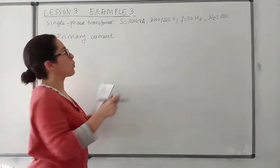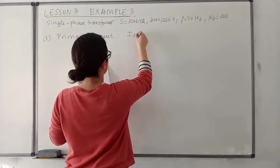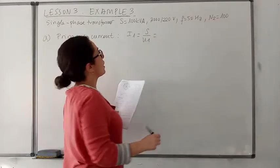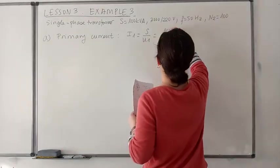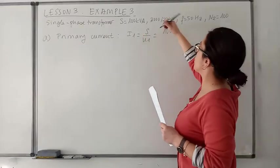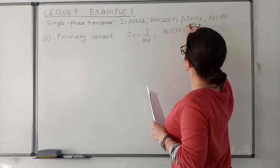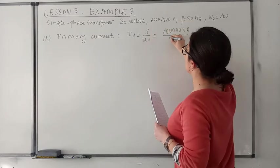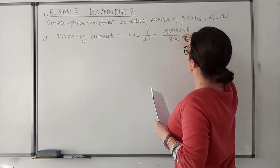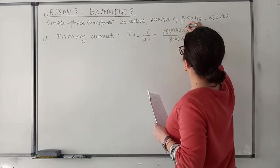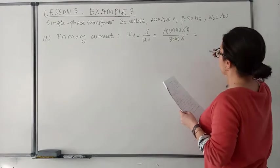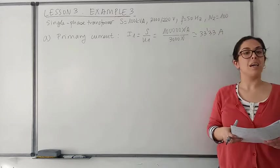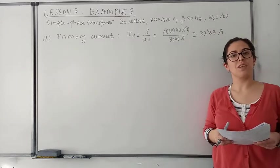The primary current can be obtained by dividing the apparent power by the primary voltage. You need to divide by the voltage in the primary winding which was 3000 V, so that means that you will get a result of approximately 33.33 amps, and that is the current in the primary circuit.